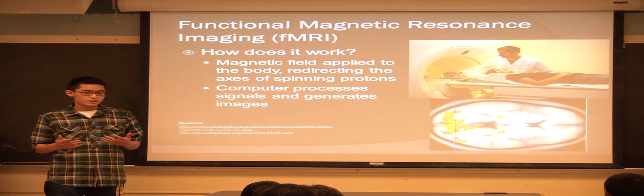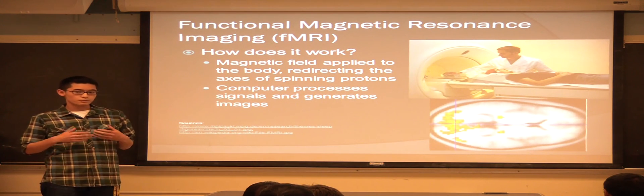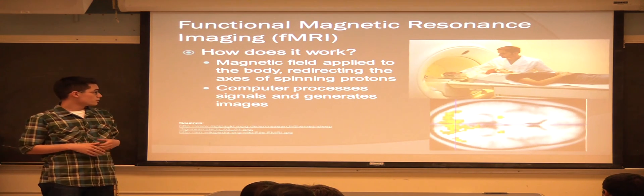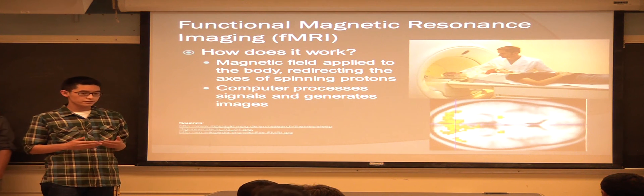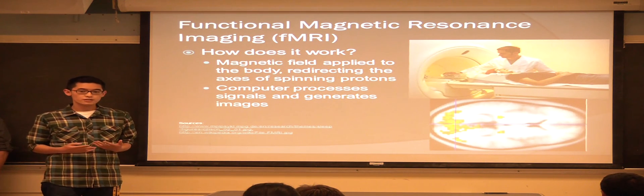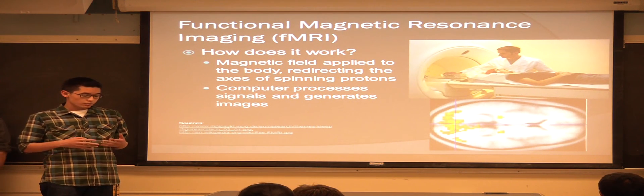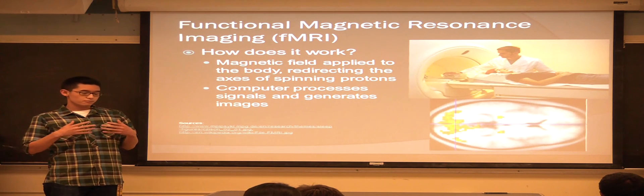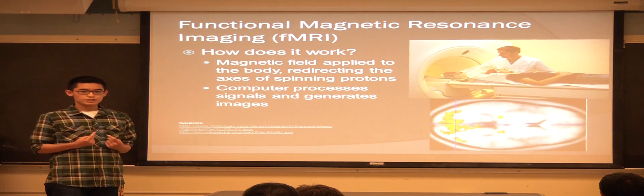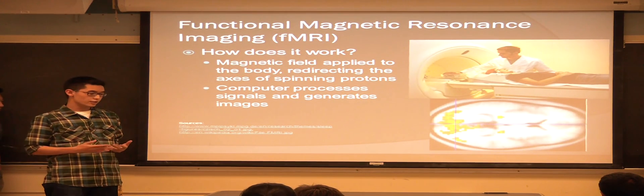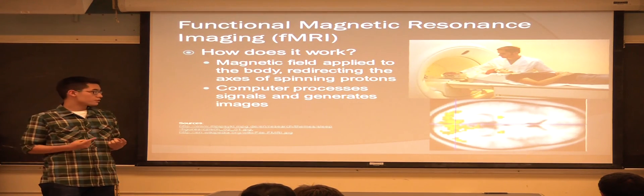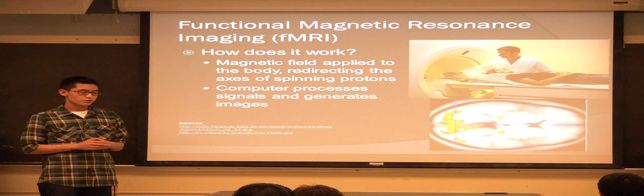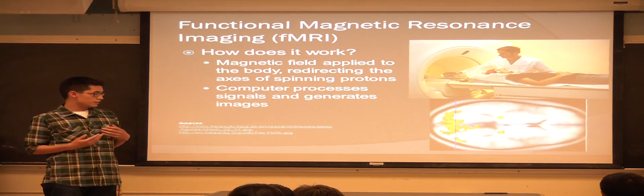So basically what the fMRI does, is that it applies a magnetic field to the body, redirecting the axis of the spin of protons. The fMRI measures the change in the spin of the protons and for how long it lasts. These signals are passed to the computer, which processes and generates different images.